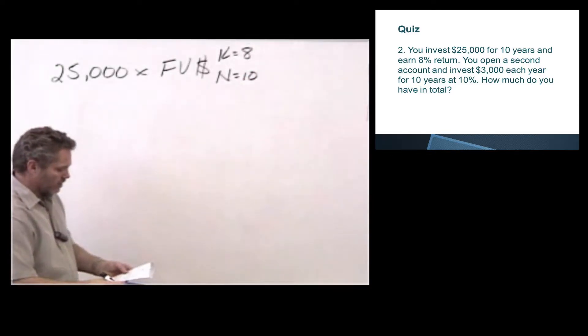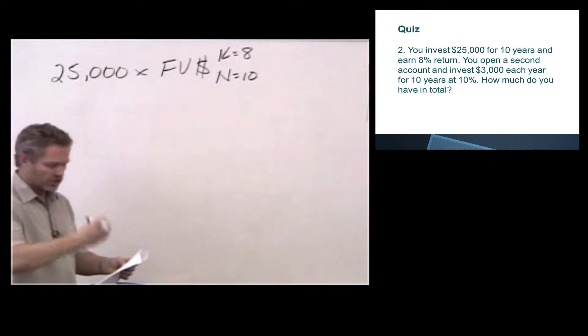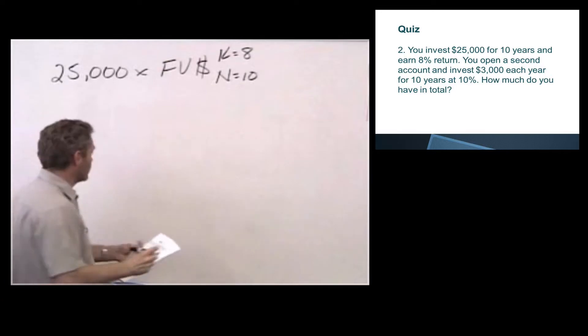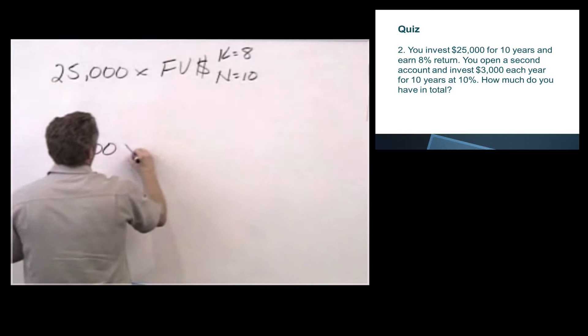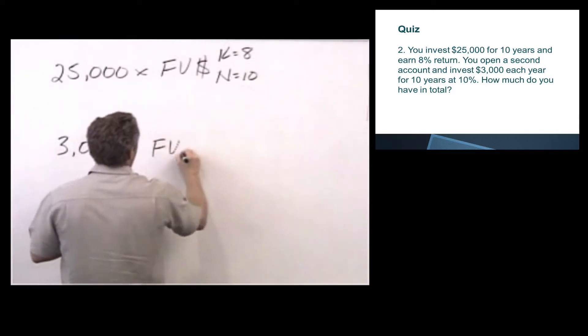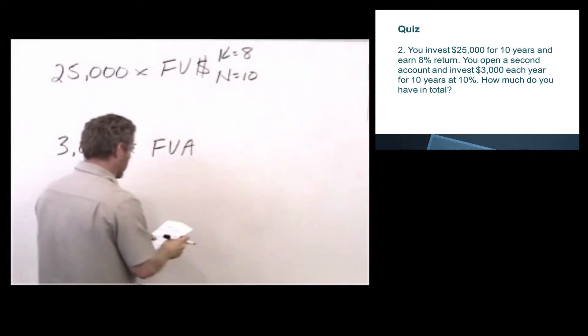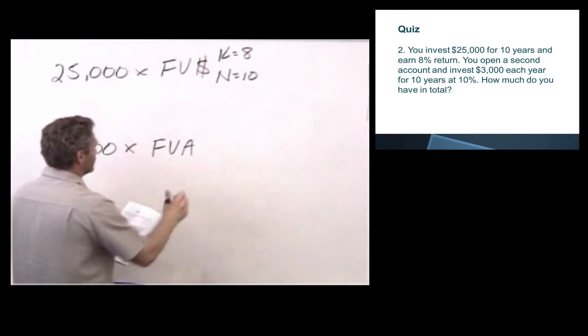The second part of the question, in our second account, you invest $3,000 each year. So each year is several payments, so this is going to be an annuity. So I go $3,000 times future value of an annuity, K equals 10, N equals 10.